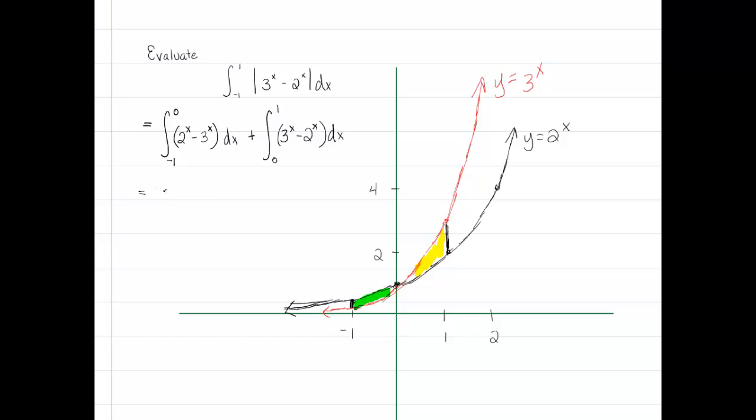The anti-derivative of 2 to the x is 2 to the x over the natural log of 2 minus the anti-derivative of 3 to the x is 3 to the x over the natural log of 3. And these two must be evaluated from x equals negative one to x equals zero. And to that, maybe I'll put this in parentheses so it's a little clearer, we're going to go ahead and add the second group. And since we already talked about what the anti-derivatives are, I'm just going to write them in very quickly here, 3 to the x over natural log of 3 minus 2 to the x over natural log of 2. And again, that's from x equals zero to x equals one.